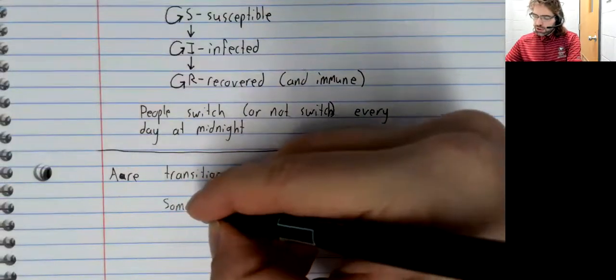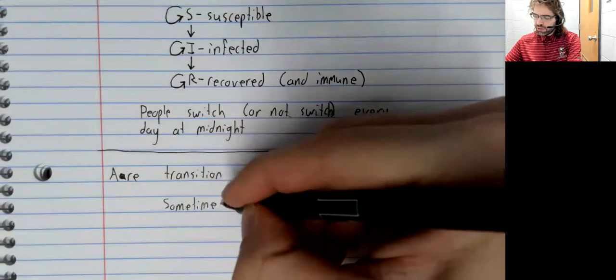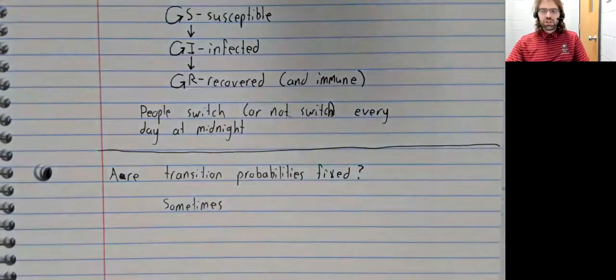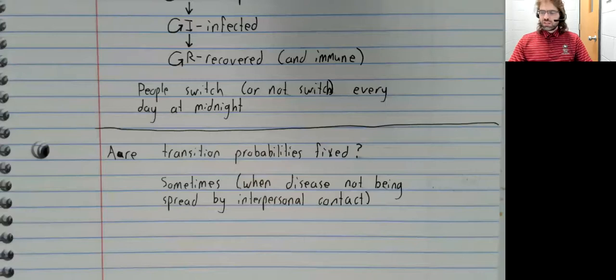There are times, however, when the Markov chain is an appropriate tool. That's going to be when the disease is not spread through interpersonal contact. I've seen papers use the Markov chain to study disease and illness that spread via improperly sterilized barbering equipment. This was in Ghana.